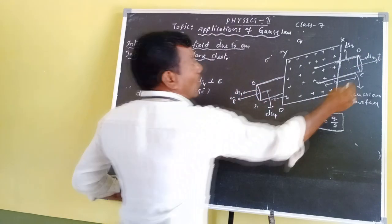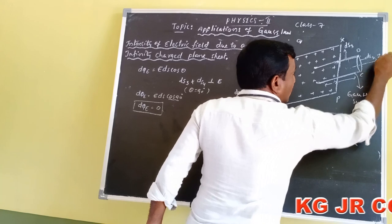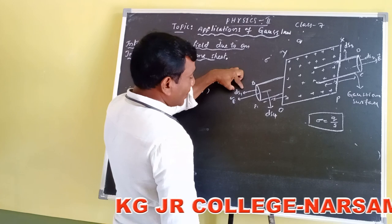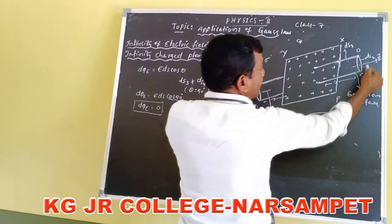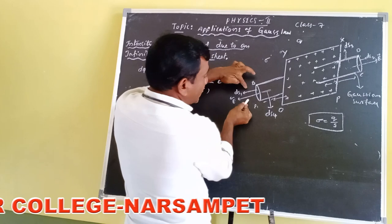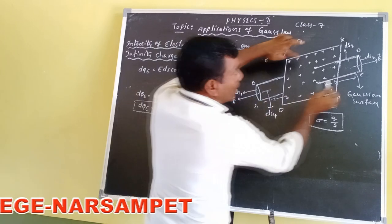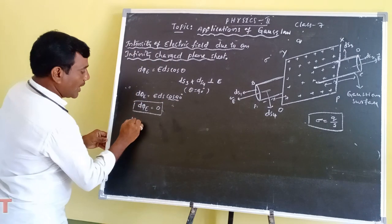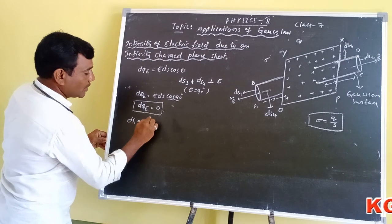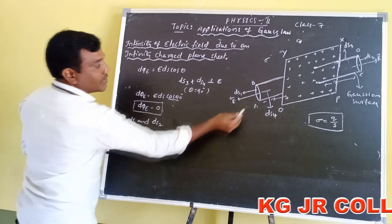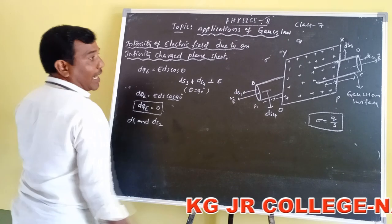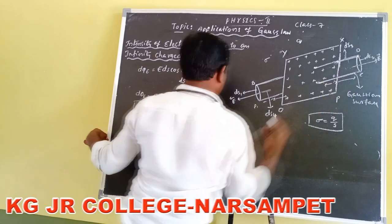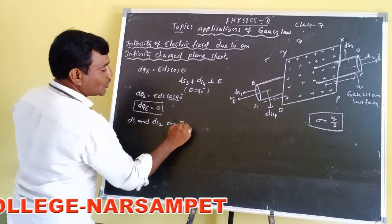Now, what about the total electric field? The electric flux is only formed through surfaces DS1 (AB surface area) and DS2 (CD surface area). From the figure, we observe that DS1 and DS2 are parallel to each other and parallel to E.